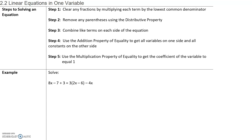Let's start with example number one. We want to solve the following equation. Step one: clear any fractions by multiplying each term by the lowest common denominator. We will skip this step because we don't have a lowest common denominator, so step one we will skip.